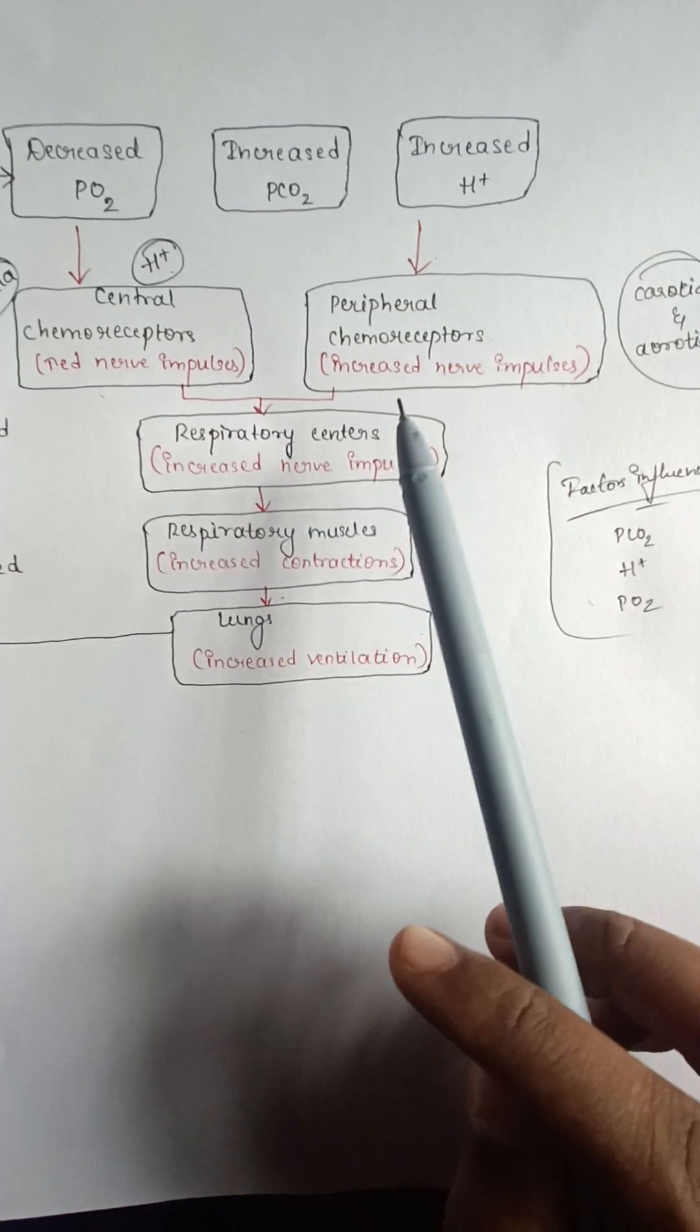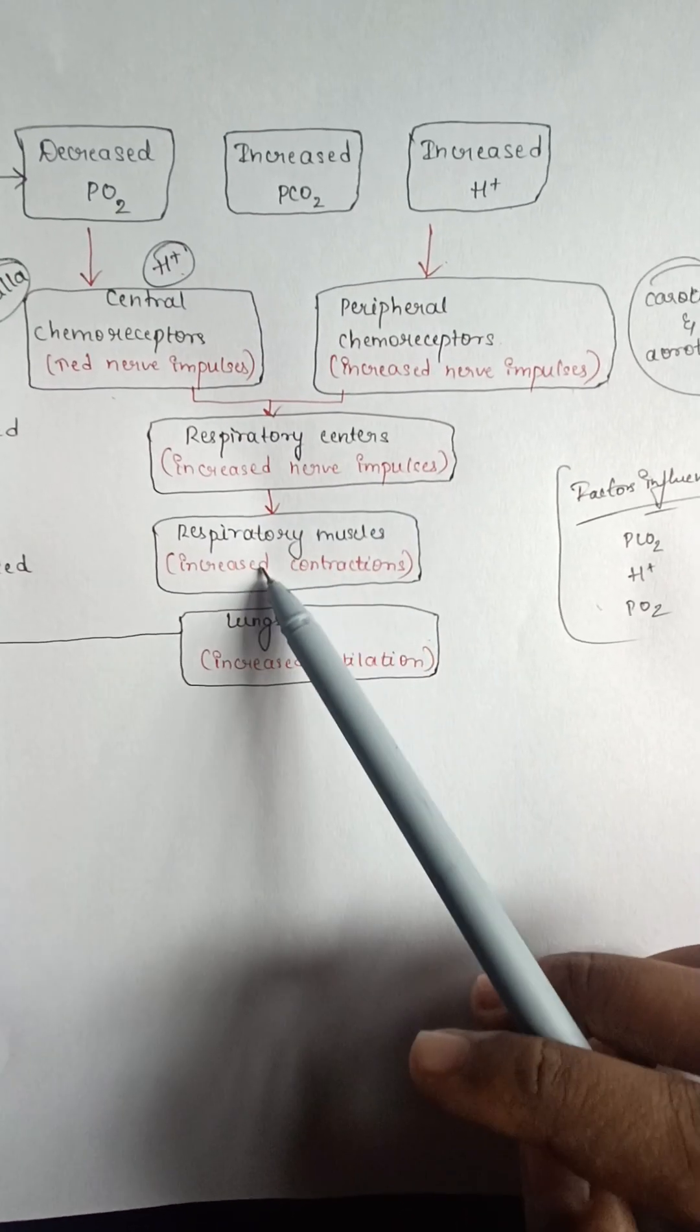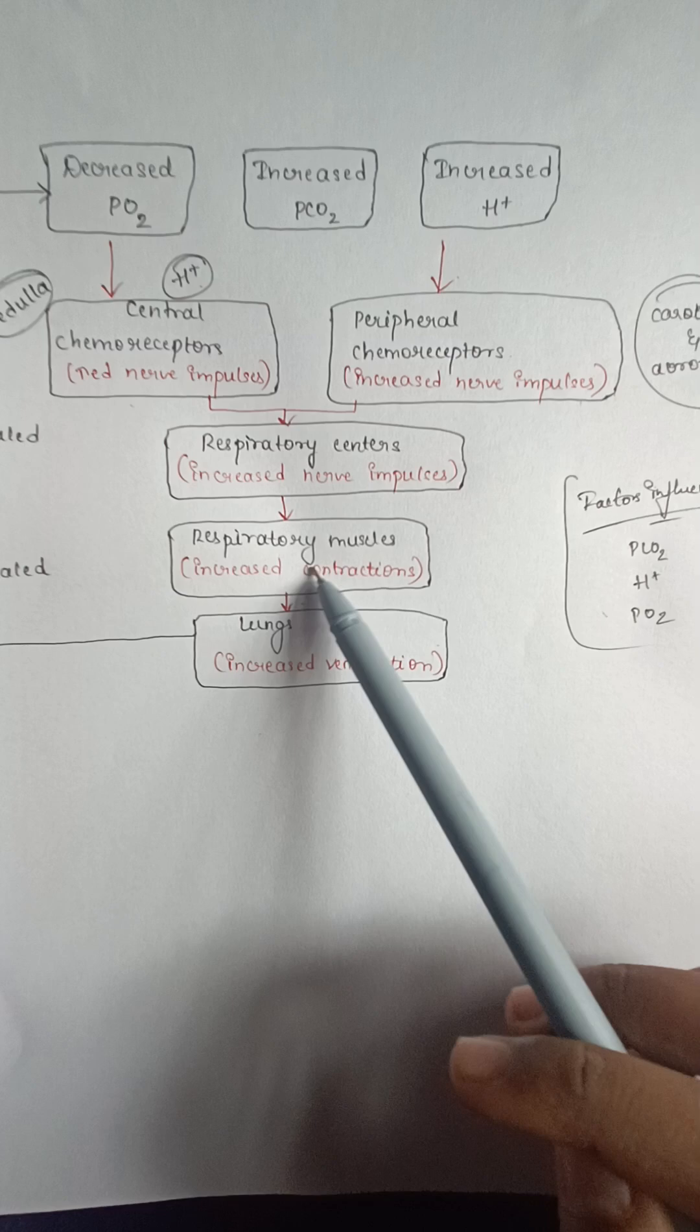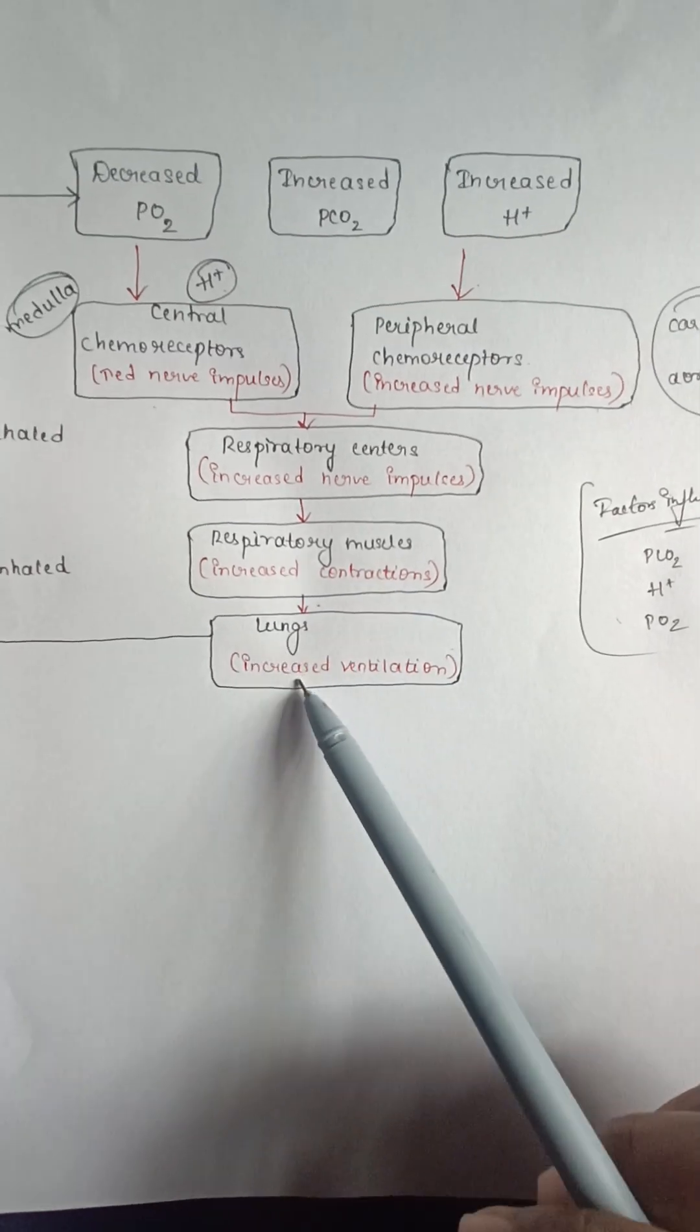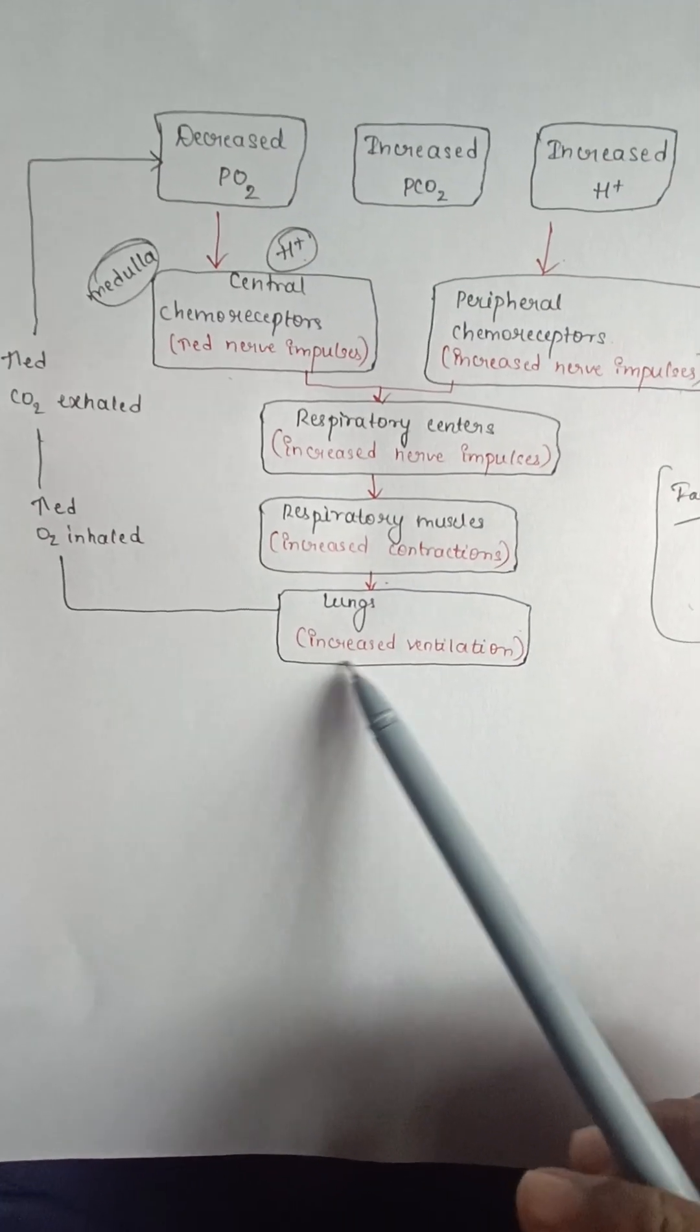The respiratory center further increases the contractions of the respiratory muscles, which causes increased ventilation in the lungs.